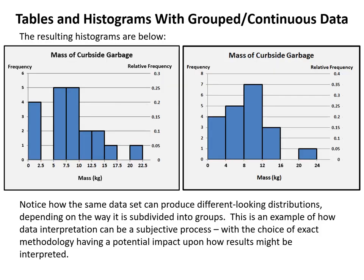The combined frequency and relative frequency histograms for both groupings show how the same data set produces visibly different-looking distributions depending on how it's subdivided. This illustrates that data interpretation can be a somewhat subjective process — the choice of methodology can have a profound impact on how the very same data is interpreted, a theme that will continue throughout this and future lessons.